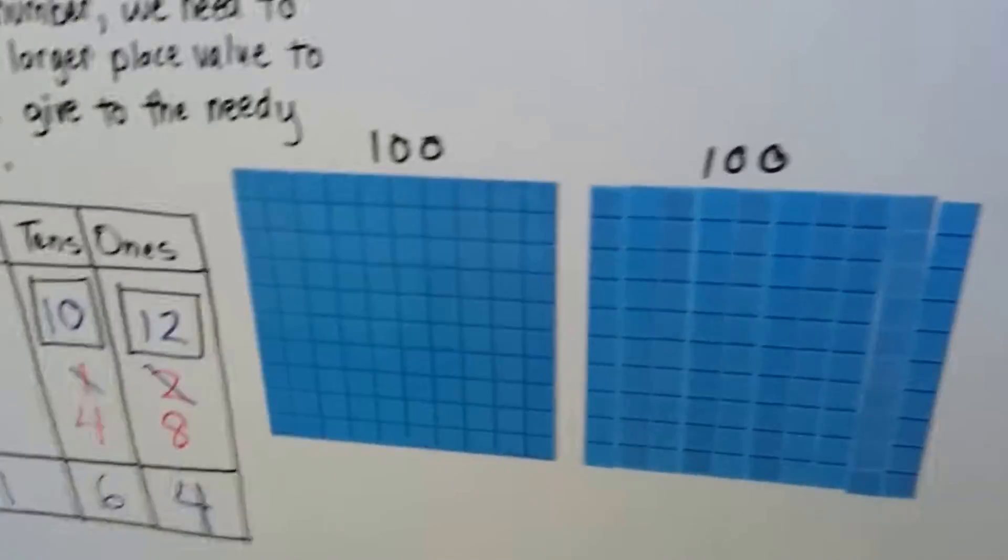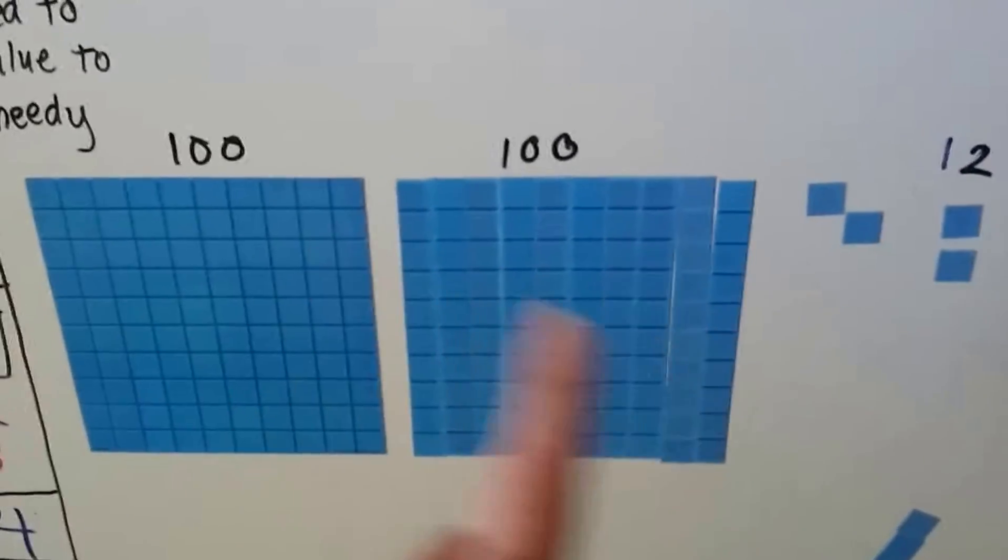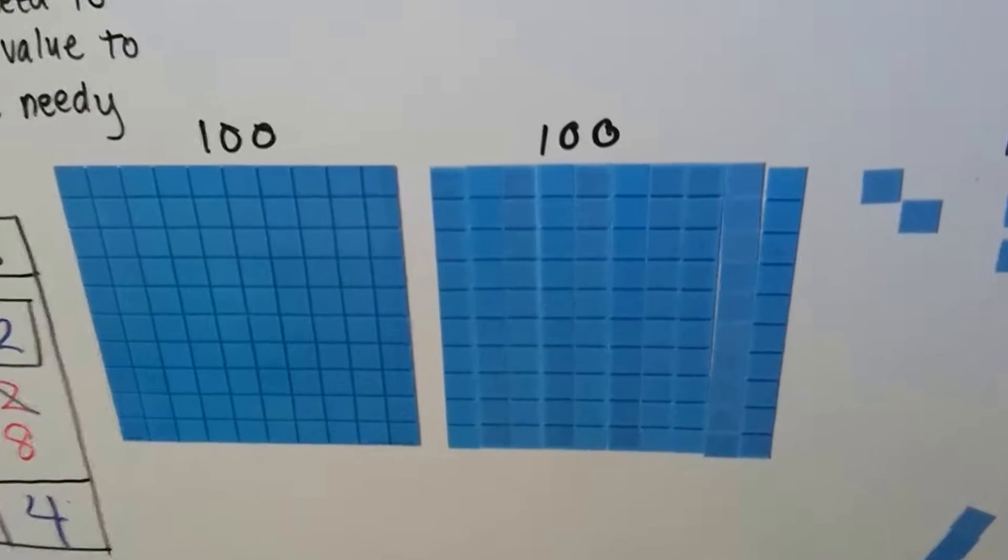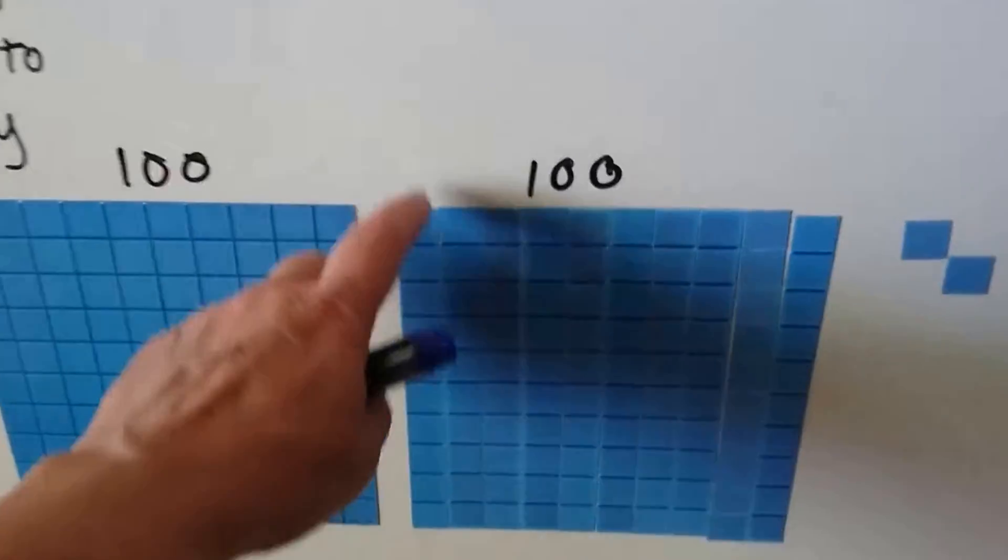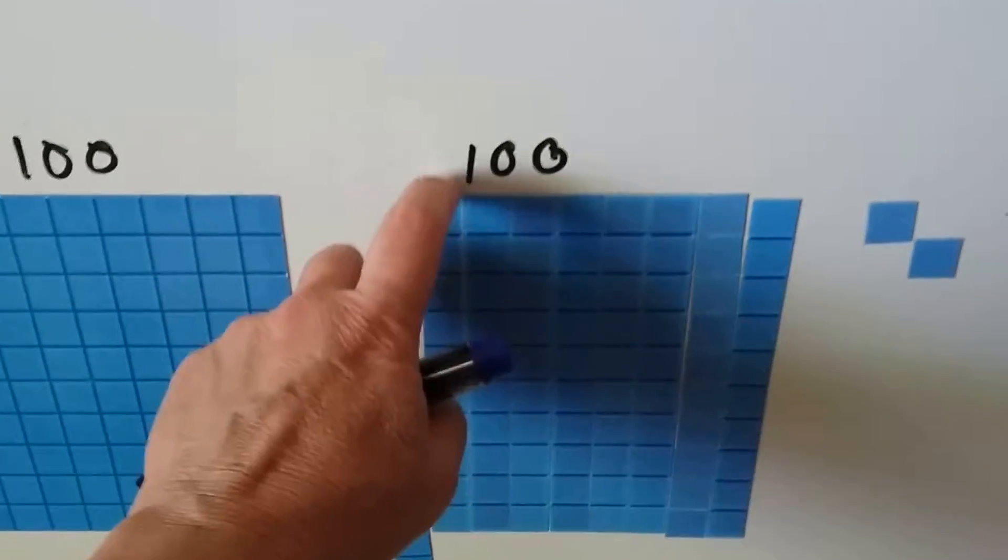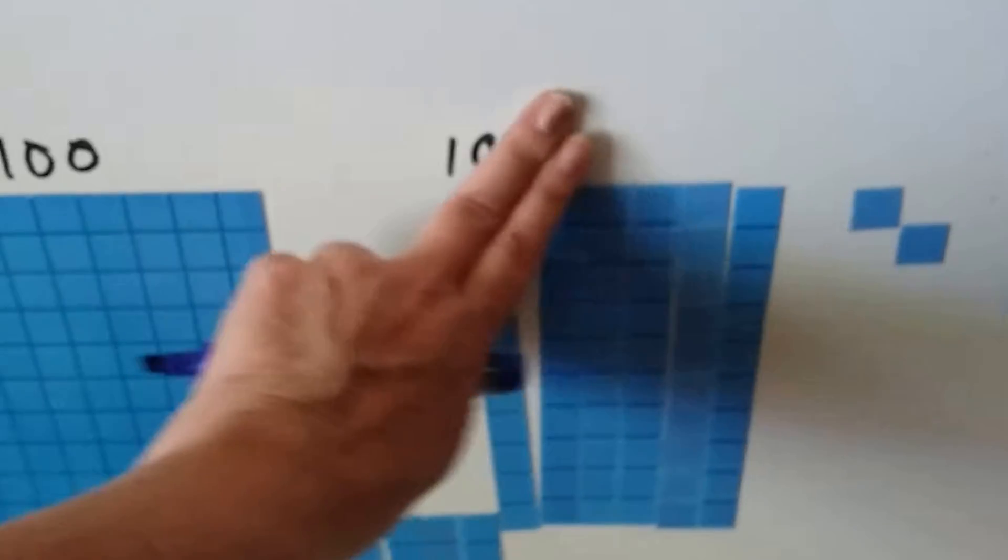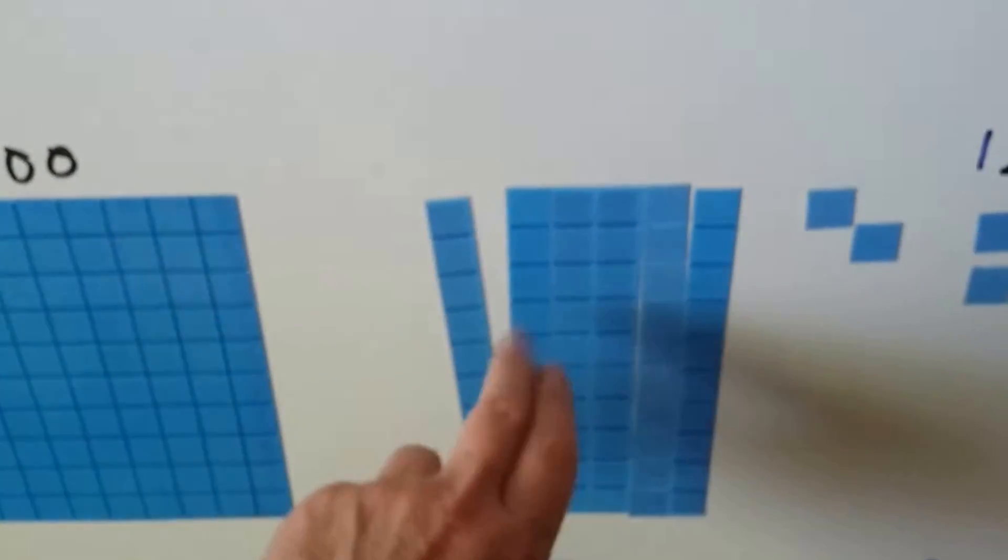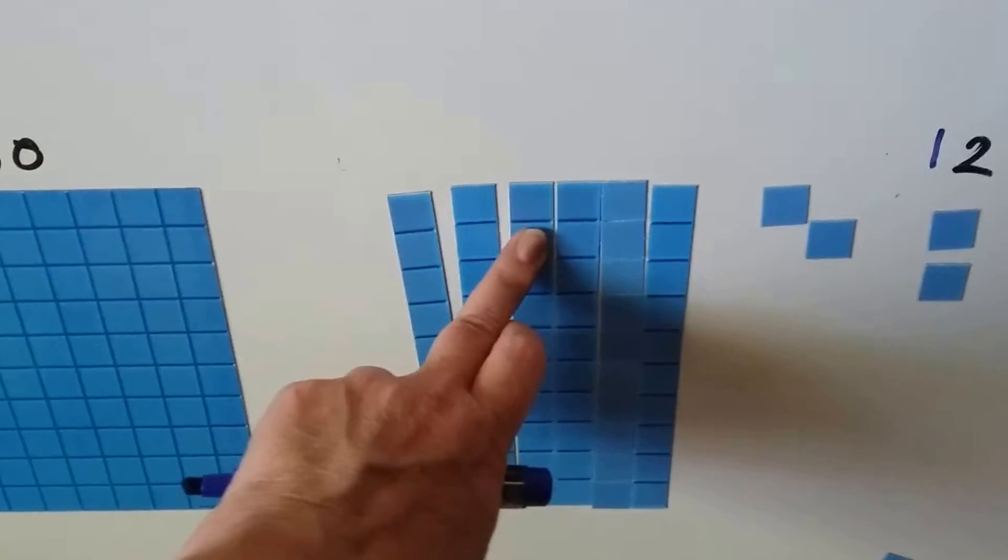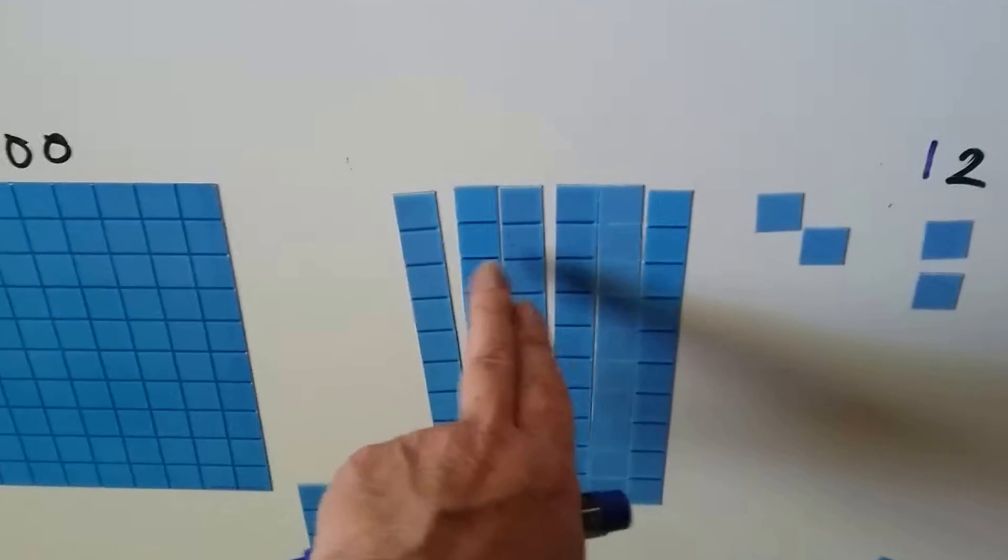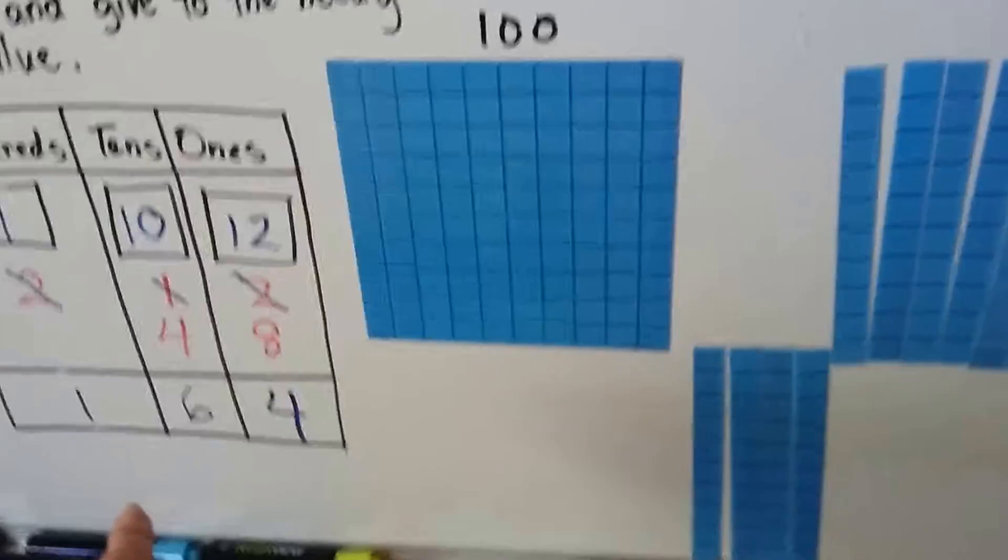But then we needed to take 4 tens away. Well, all we have is two 100s and we need to take 4 tens away. So we take away 1, 2, 3, 4. We take away these 4 and we don't have 100 anymore. We're left with 6 tens and 100. 100, 6 tens, and 4 ones.